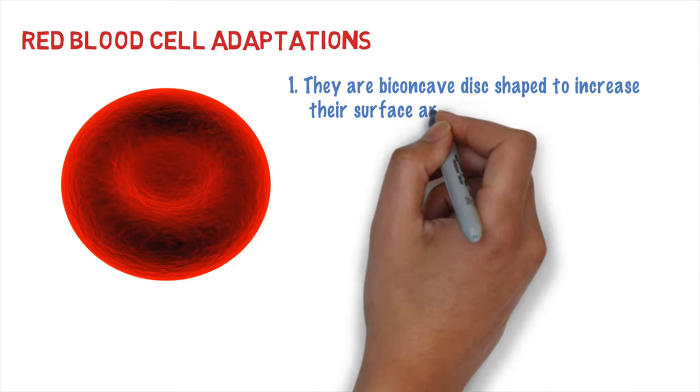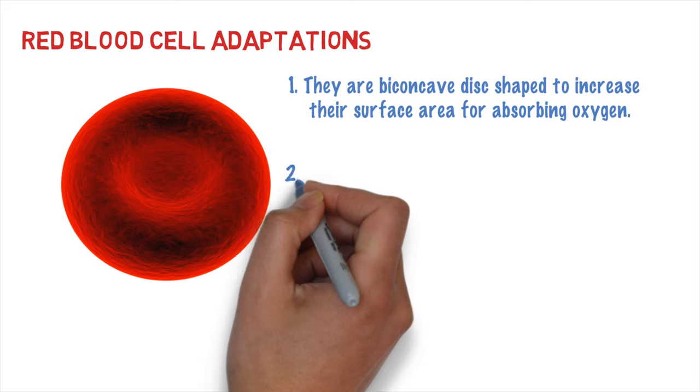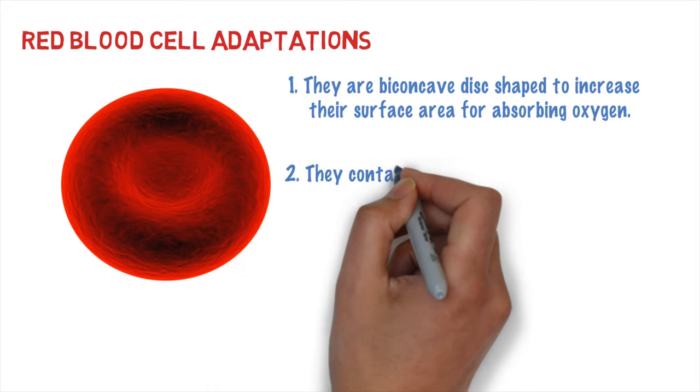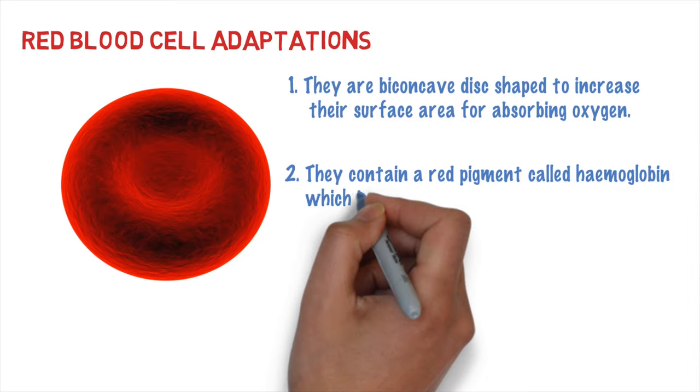You need to know how it's adapted. The first thing you'll notice is the shape of the red blood cell. It's biconcaved, and this means it's donut-shaped. And the idea of this is it gives it a bigger surface area for absorbing oxygen. The second thing is the color. The red pigment inside is a pigment called haemoglobin, and what that does is it binds reversibly to oxygen.